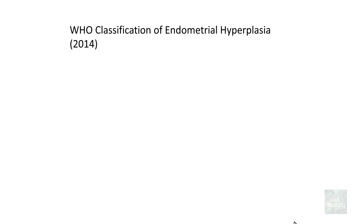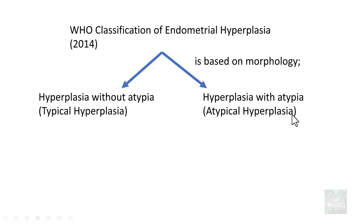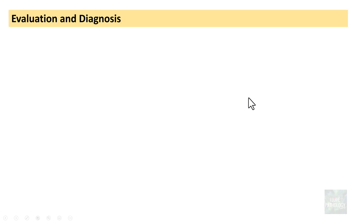In 2014, the World Health Organization proposed a classification system based on morphological features: hyperplasia without atypical features, also referred to as typical hyperplasia, and hyperplasia with atypical features, referred to as atypical hyperplasia, where nuclear atypical features are present. This is a two-tiered classification: endometrial hyperplasia without atypia and endometrial hyperplasia with atypia.